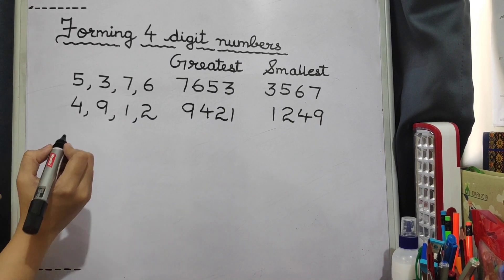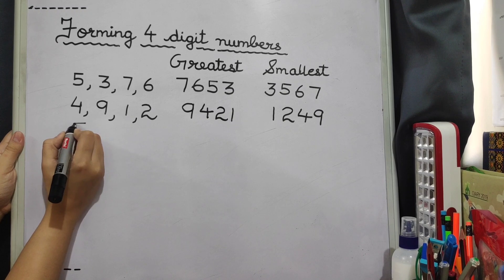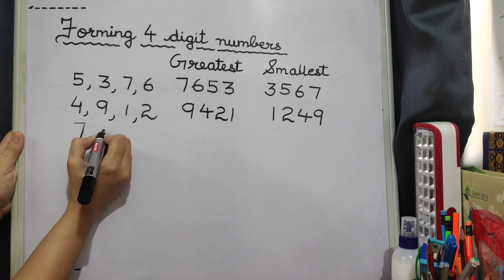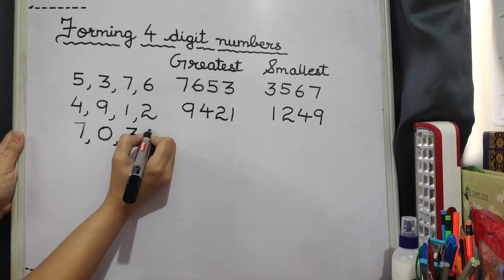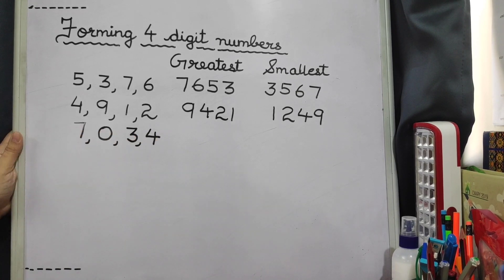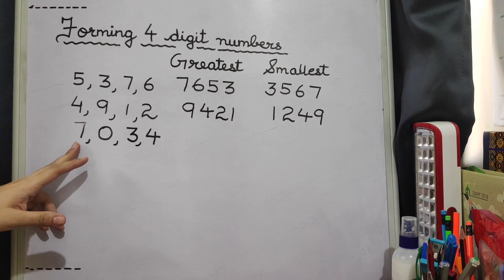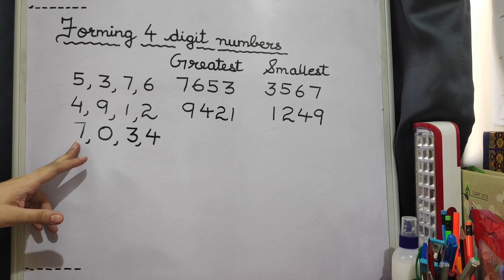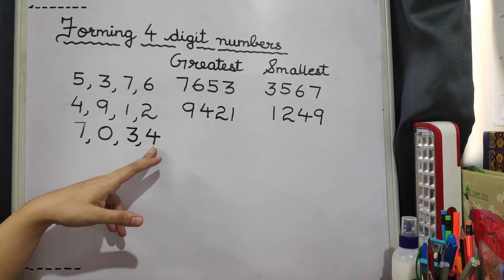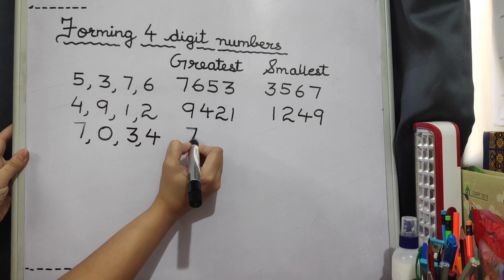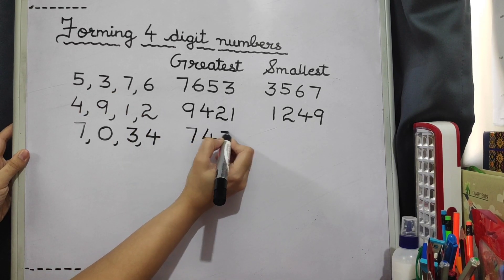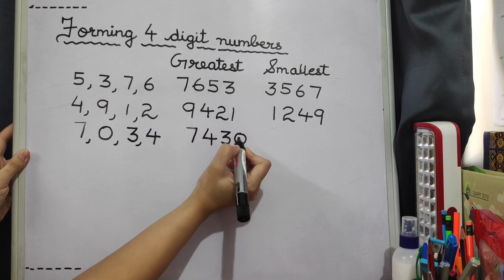Now let's suppose these digits are given to you: 7, 0, 3, 4. The greatest number you know how to find it is 7, 4, 3 and then 0. So it is 7430.